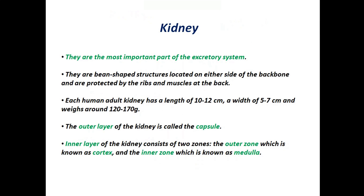Here's the first organ: kidney. They are the most important part of the excretory system. They are bean-shaped structures located on either side of the backbone, and are protected by the ribs and muscles at the back. Each human adult kidney has a length of 10-12 cm, a width of 5-7 cm, and weighs around 120-170 grams. The outer layer of the kidney is called the capsule. The inner layer consists of two zones: the outer zone known as the cortex, and the inner zone known as the medulla.